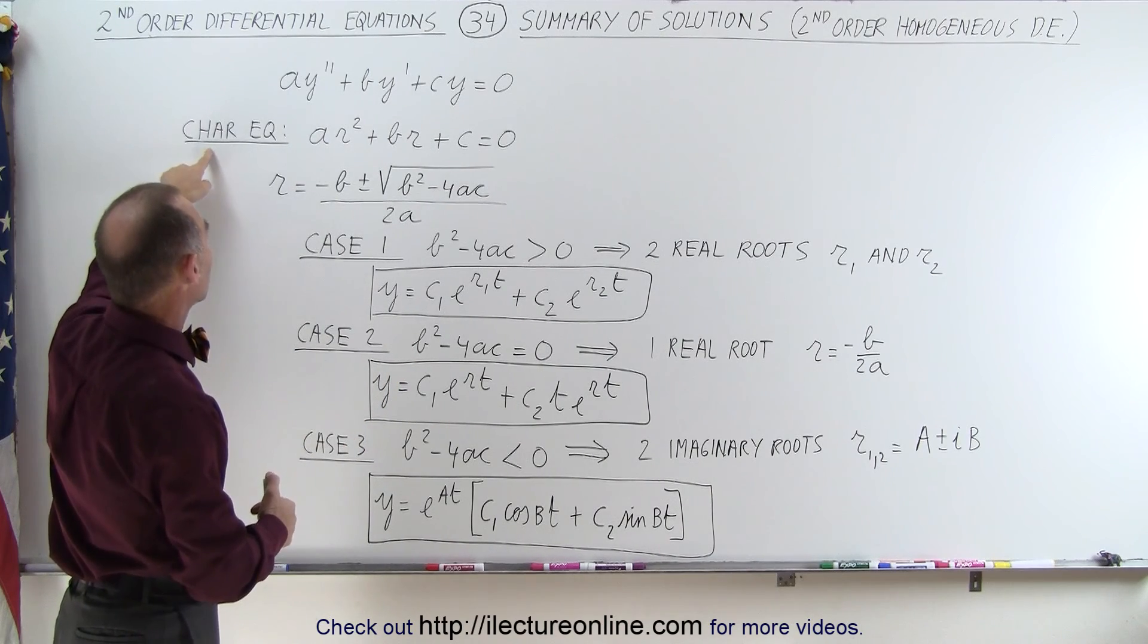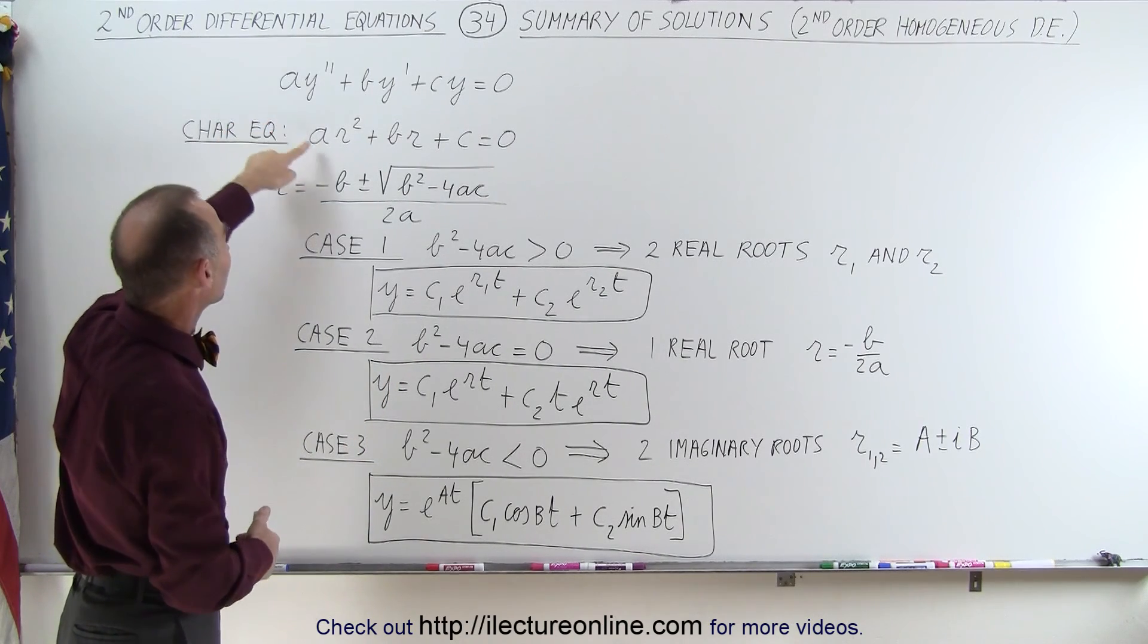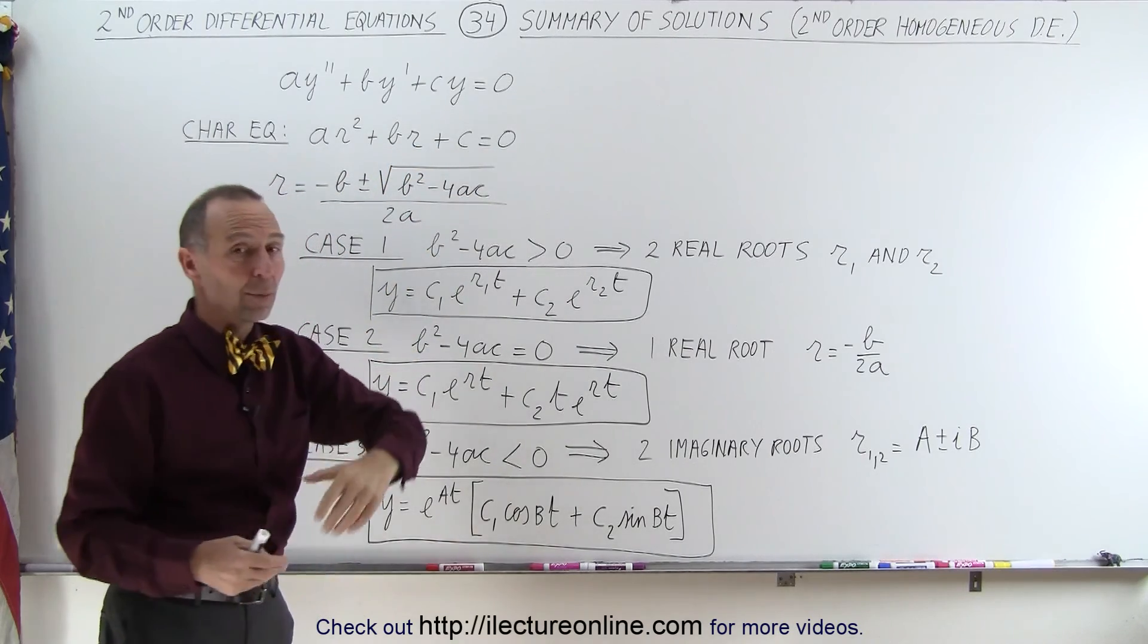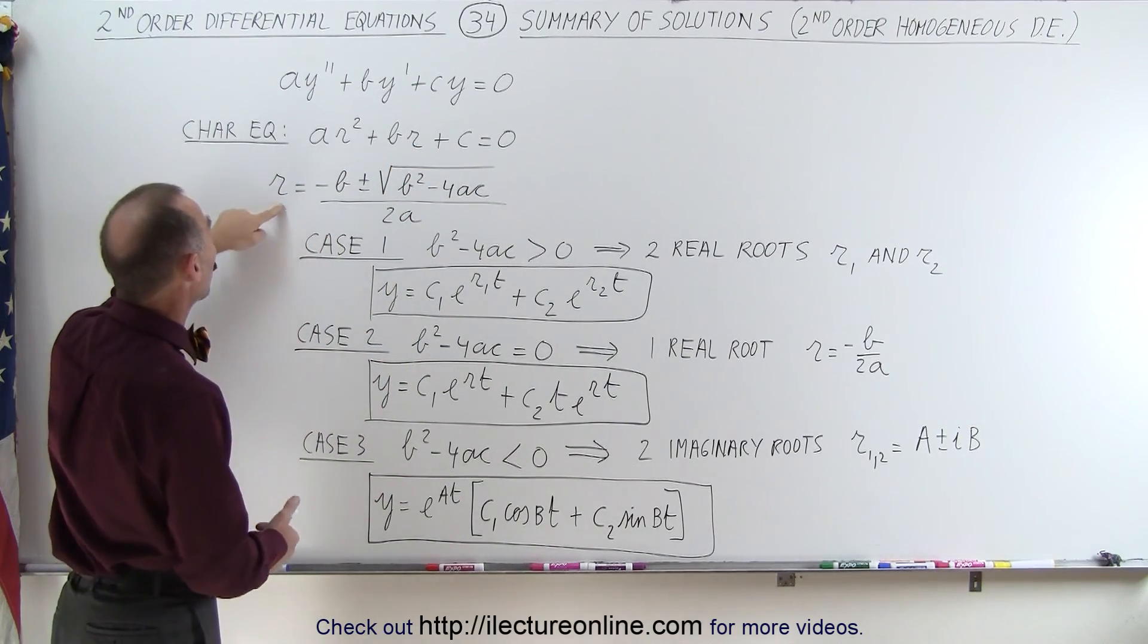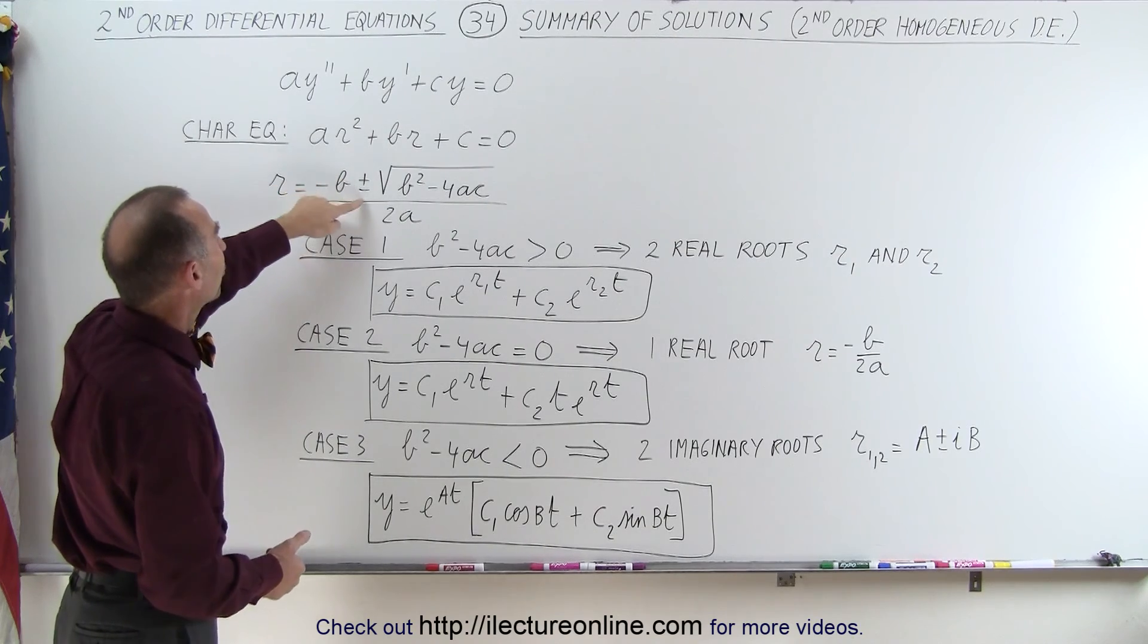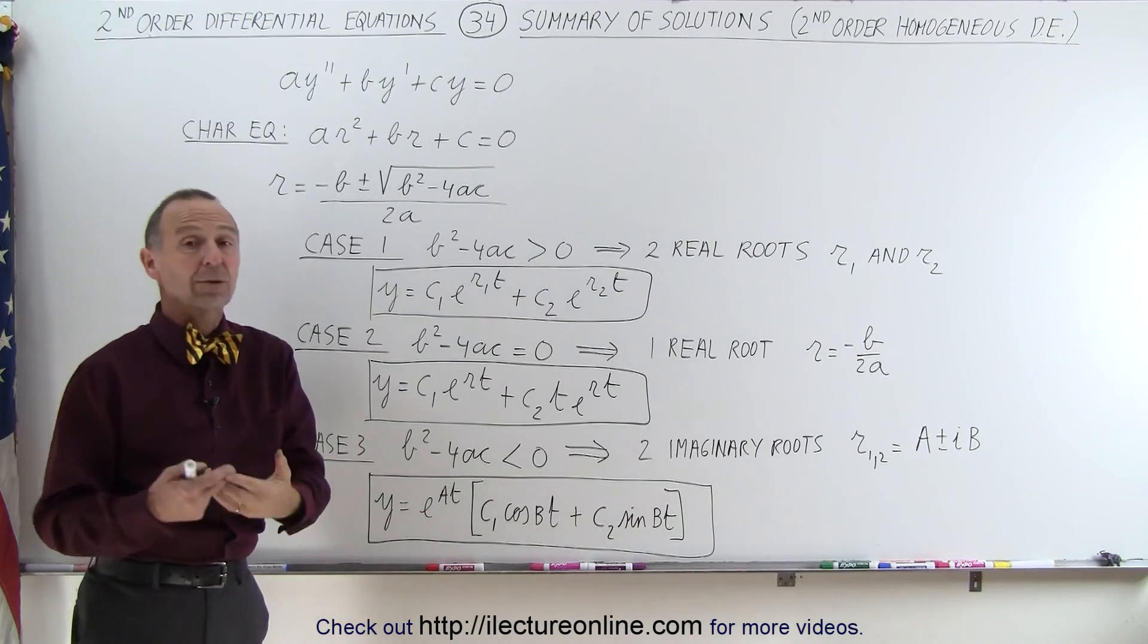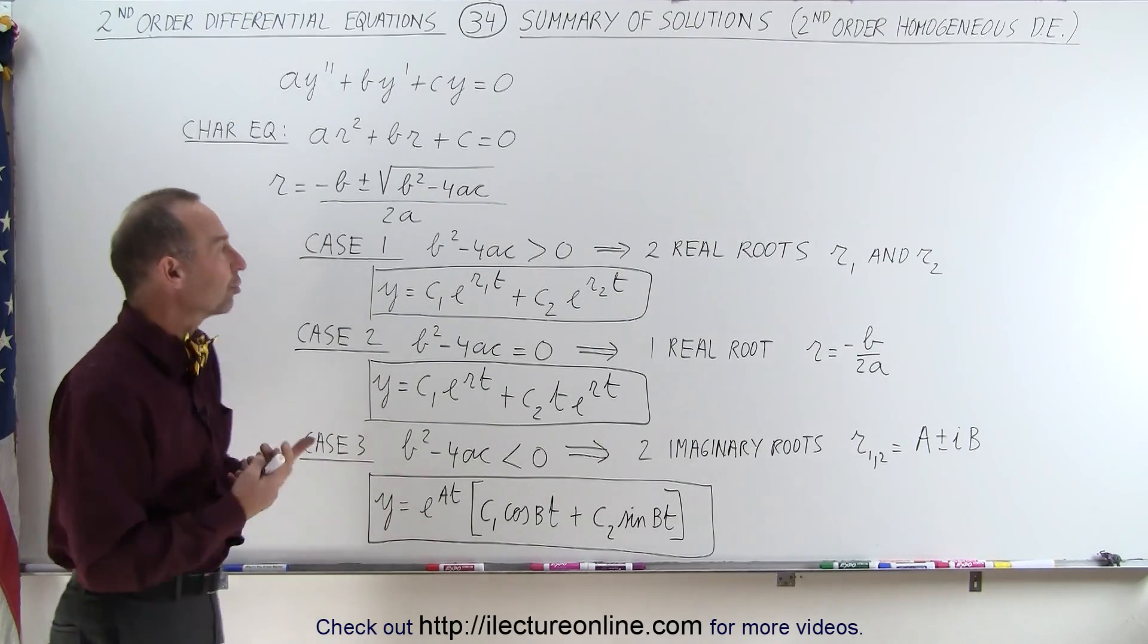And when we use a characteristic equation, we can write this as ar² + br + c = 0. And when we solve for the roots, we have r = -b ± √(b² - 4ac) / 2a, just like we're solving a quadratic equation in algebra.